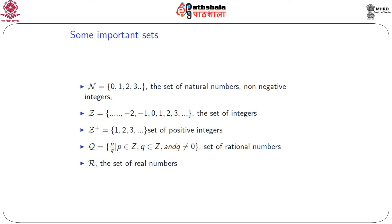Now I will discuss a few of the important sets we often use. The first is the set of natural numbers, or non-negative integers, denoted as script N — a collection of {0, 1, 2, 3, ...}. Then we have the set of integers, which contains both positive and negative integers as well as 0; and if you want a set of positive integers, we can write {1, 2, 3, ...}. Then we can have the set of rational numbers, denoted by script Q — a collection of all p/q form where p and q both belong to the integers and q ≠ 0. Script R is the general notation used to denote the set of real numbers.